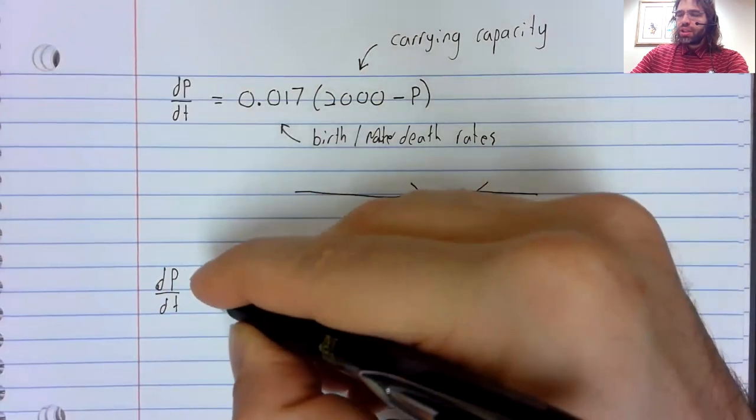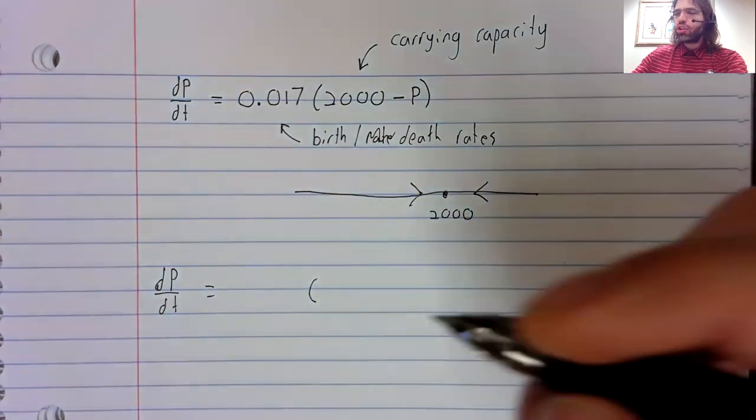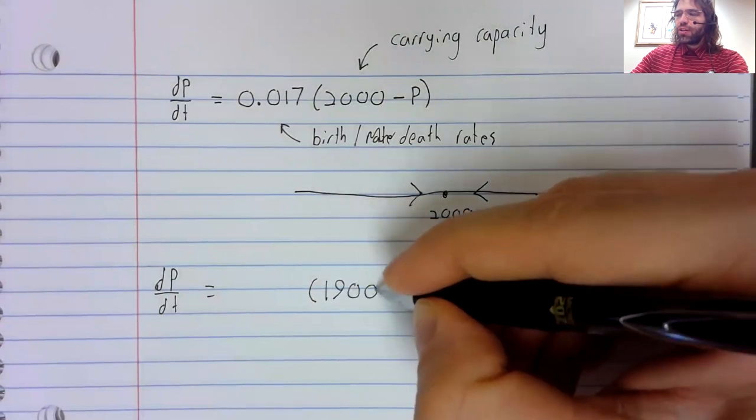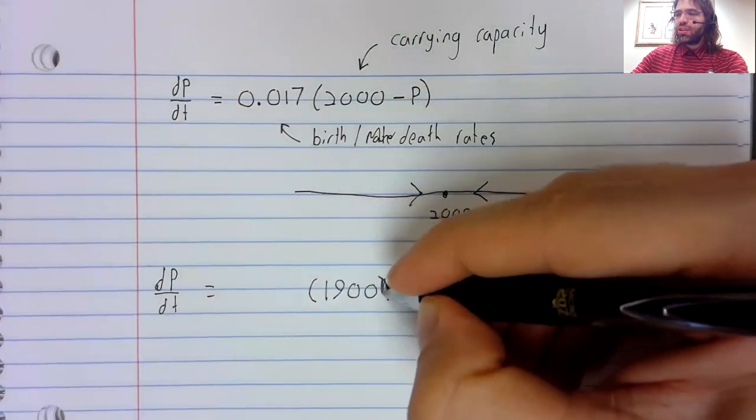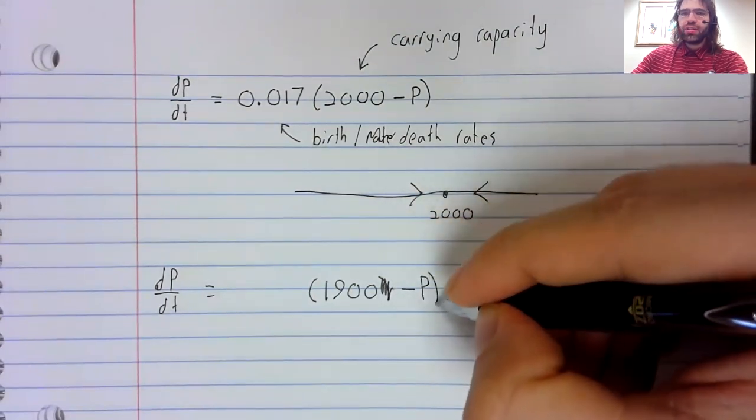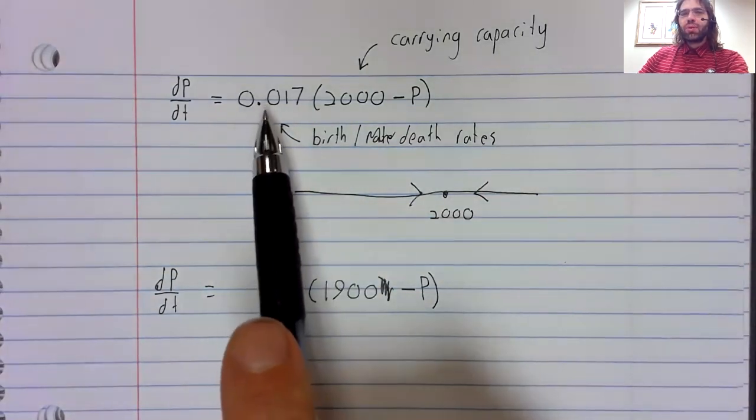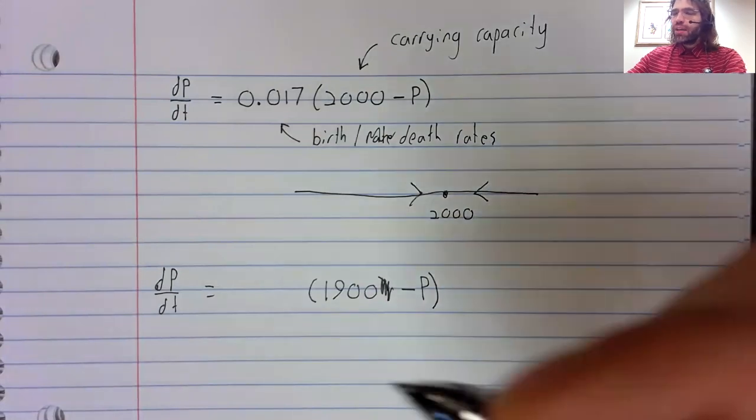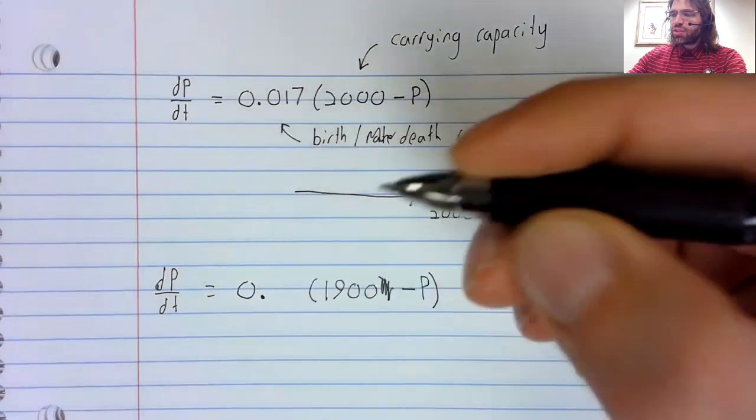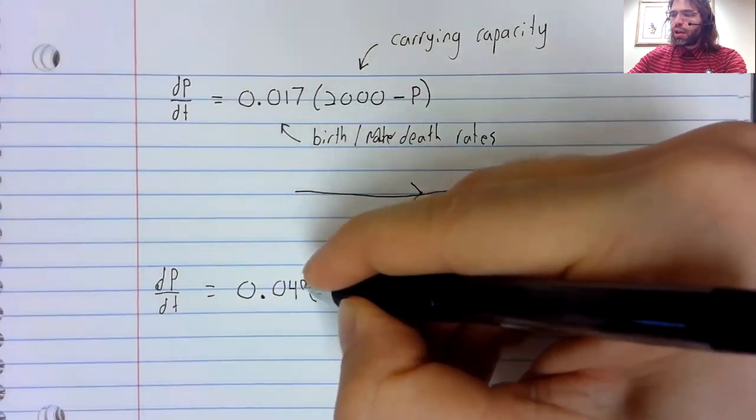Suppose that the carrying capacity is actually 1,900, and suppose this number summarizing birth and death rates is actually 0.048.